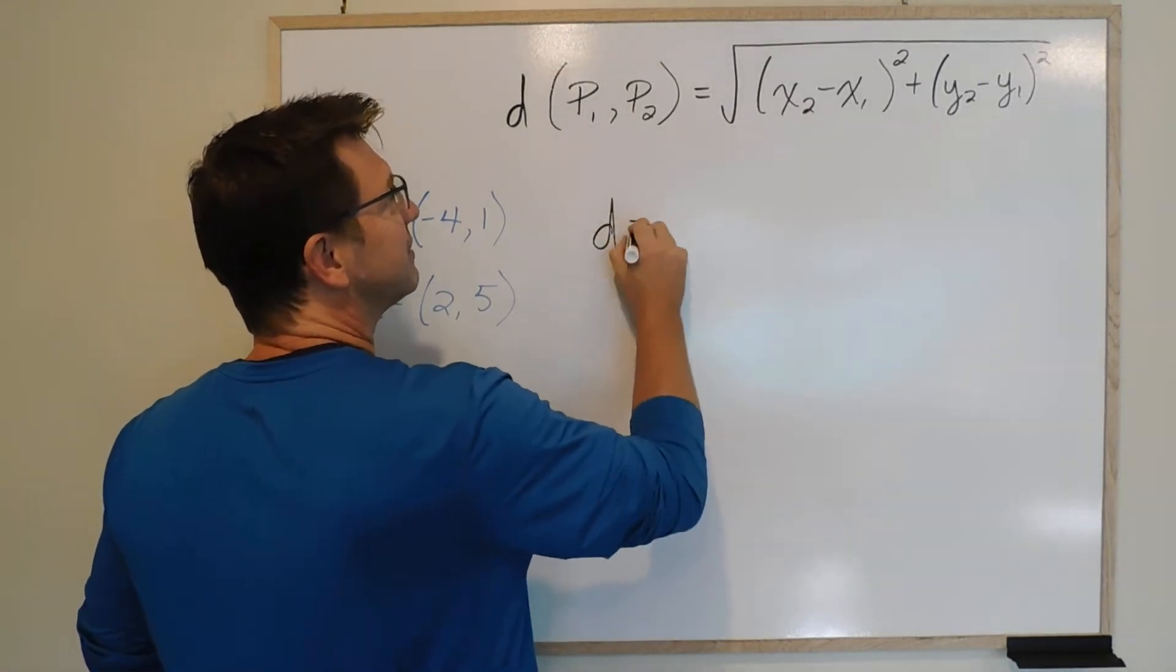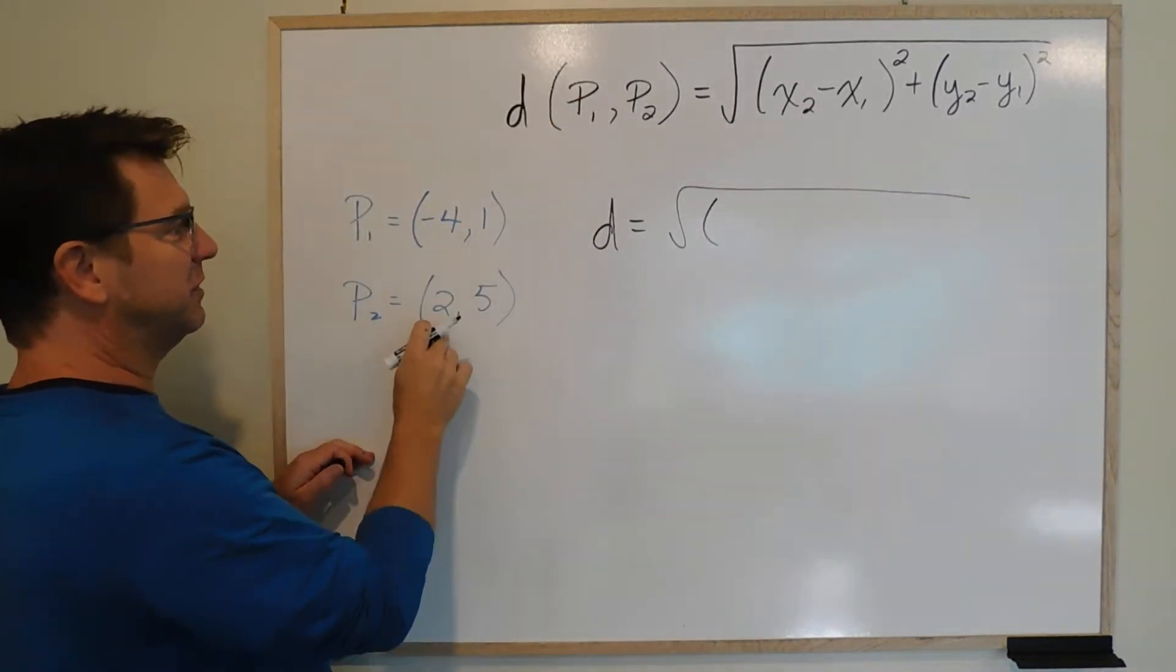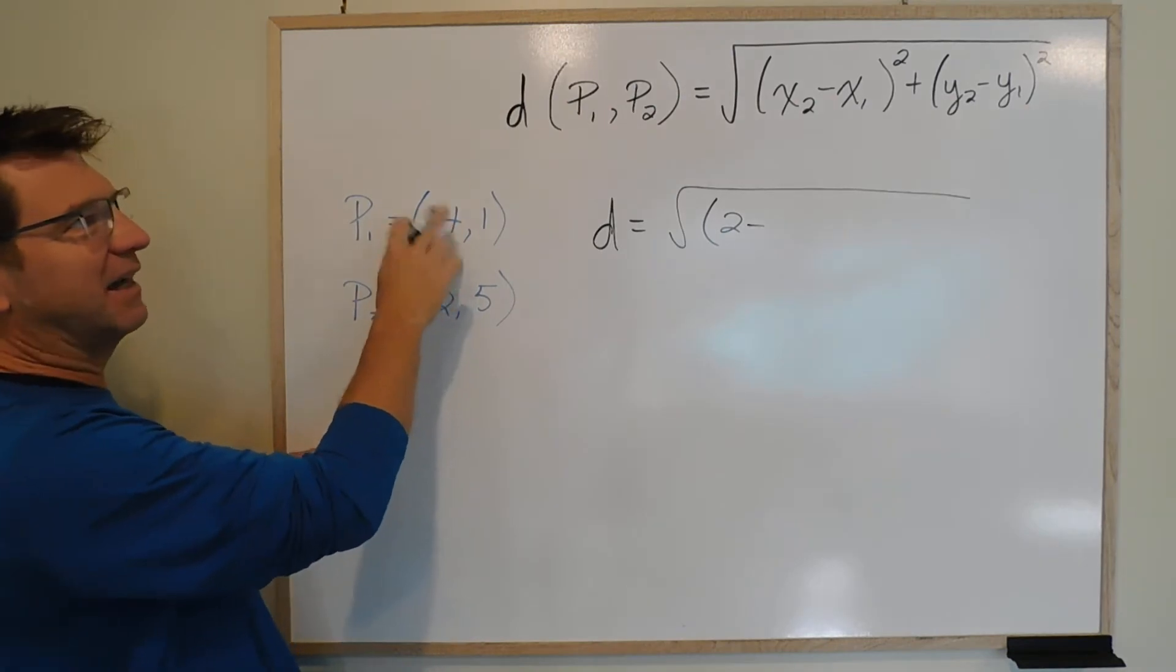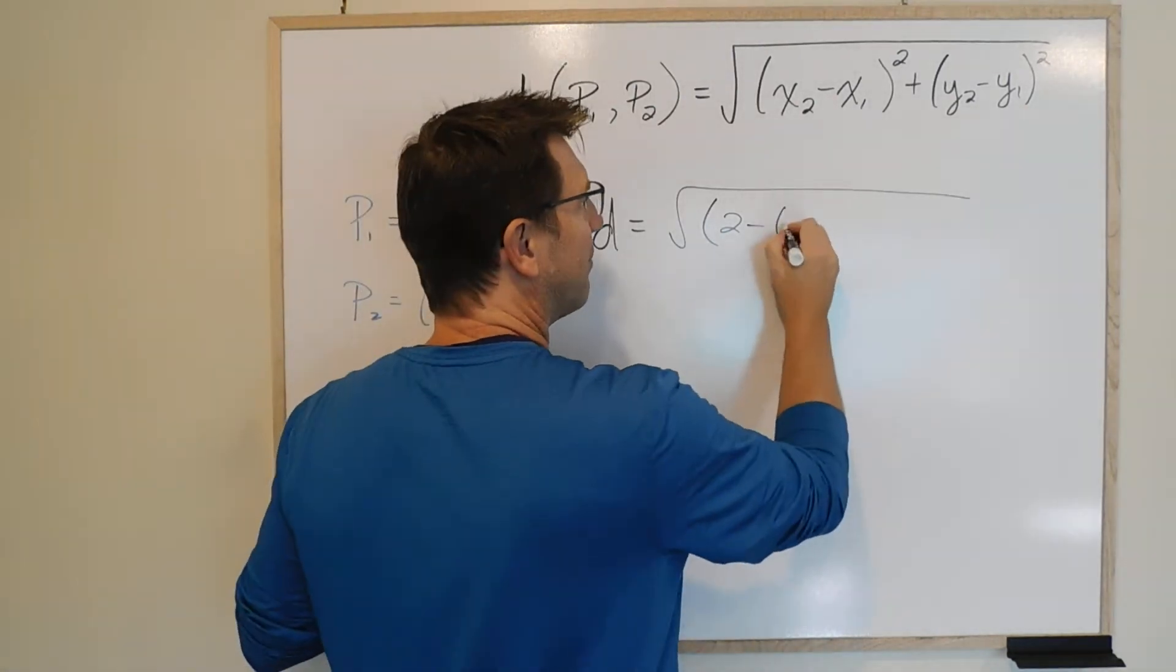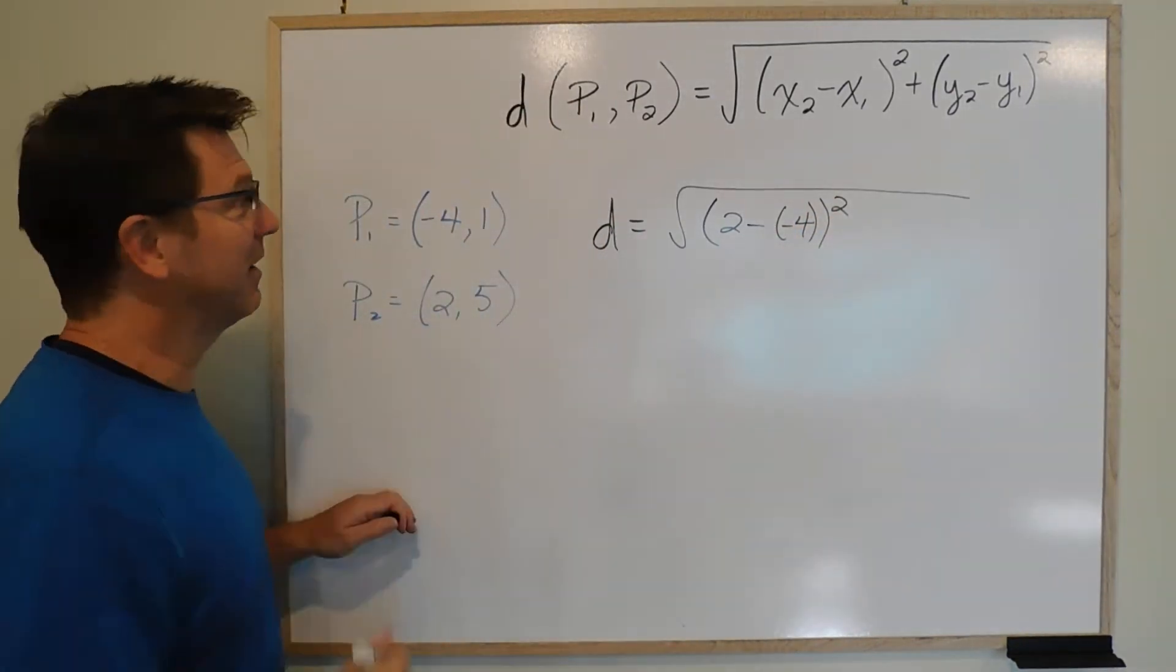So the distance is going to equal, well, x2, x2 is 2, minus x1 is negative 4, be careful. You've got minus negative 4, you have a double negative there, we've got to be careful with that.